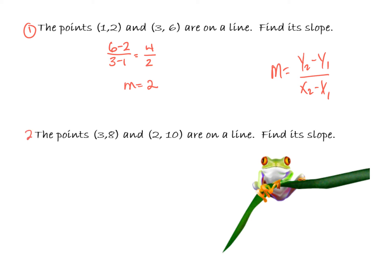Go ahead and do the second problem. The points three, eight and two, ten are on a line — find its slope. For this one, we take our y's: ten minus eight, over our x's: two minus three. Ten minus eight is two, two minus three is negative one, which means my slope is negative two.